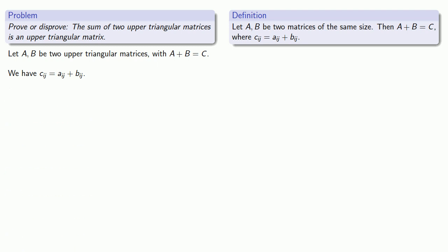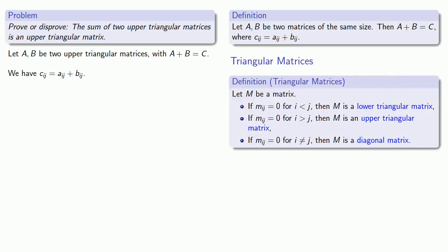Since we know that the two matrices are upper triangular, our definition says that if i is greater than j, then Aij and Bij are both going to be 0, so Cij will also be 0. And that means C itself will also be an upper triangular matrix.